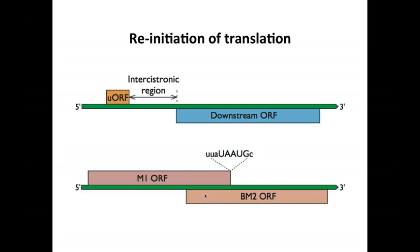Another mechanism for making multiple proteins from a single mRNA is reinitiation of translation. Eukaryotic ribosomes don't reinitiate very efficiently — once they translate an open reading frame and reach a termination codon, they fall off and don't readily reinitiate at a downstream ORF. But under certain situations, reinitiation of translation can occur, and we have two examples in viral systems.